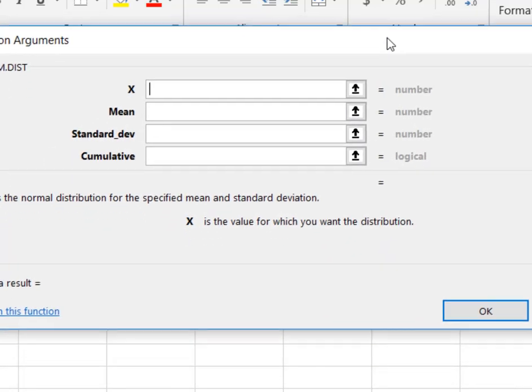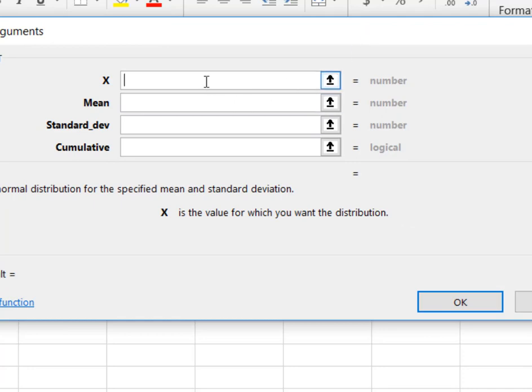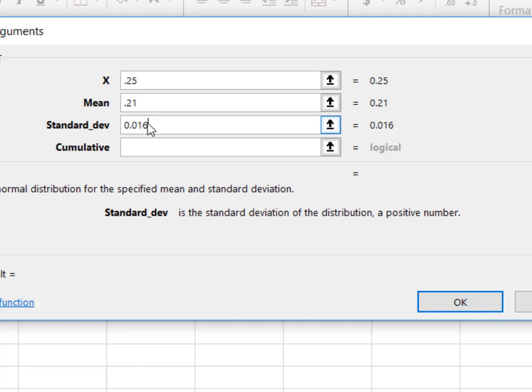And it's going to give me my dialog box. So remember, I said that I was going to let P-hat substitute for x. P-hat was 0.25. I said that I was going to let my population proportion stand in for the mean, which is 0.21. And I said that I was going to let the standard error of the proportion represent the standard deviation. And we calculated that to be 0.0166.